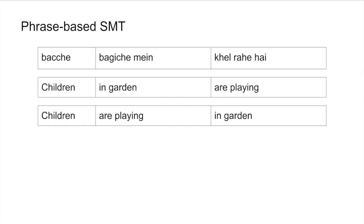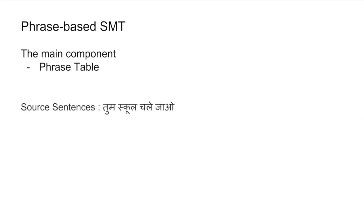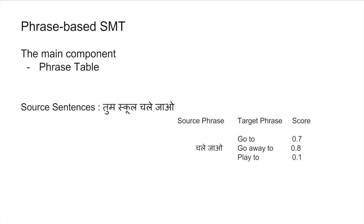The important question is how phrase-based statistical machine translation works in detail. It works on a phrase table. For example, given the source sentence 'tum skul chale jau' and we want the target sentence in English — 'tum' can map to different phrases, and 'chale jau' can translate as 'go to,' 'go away to,' or 'play to,' each with different scores. This is the phrase table.